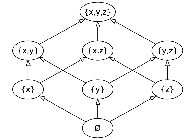The power set of a set S, together with the operations of union, intersection and complement, can be viewed as the prototypical example of a Boolean algebra. In fact, one can show that any finite Boolean algebra is isomorphic to the Boolean algebra of the power set of a finite set. For infinite Boolean algebras this is no longer true, but every infinite Boolean algebra can be represented as a subalgebra of a power set Boolean algebra.